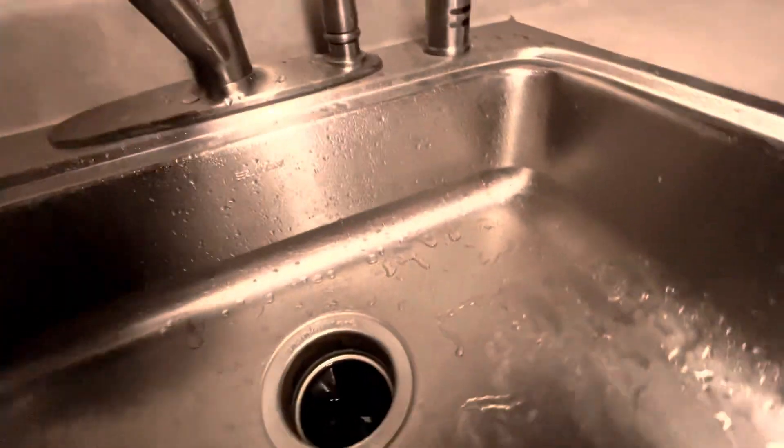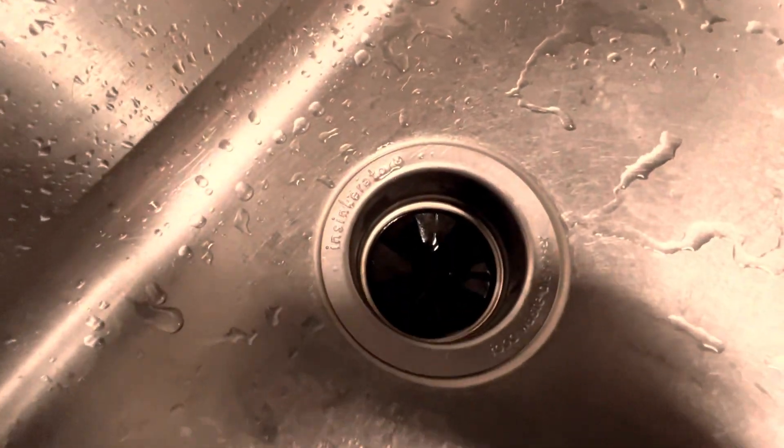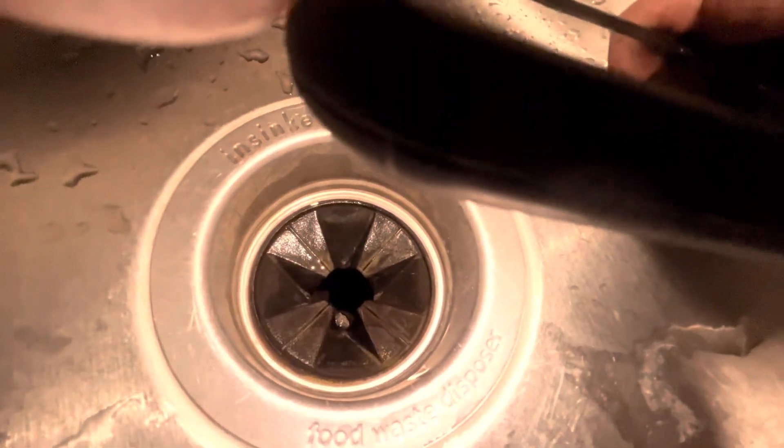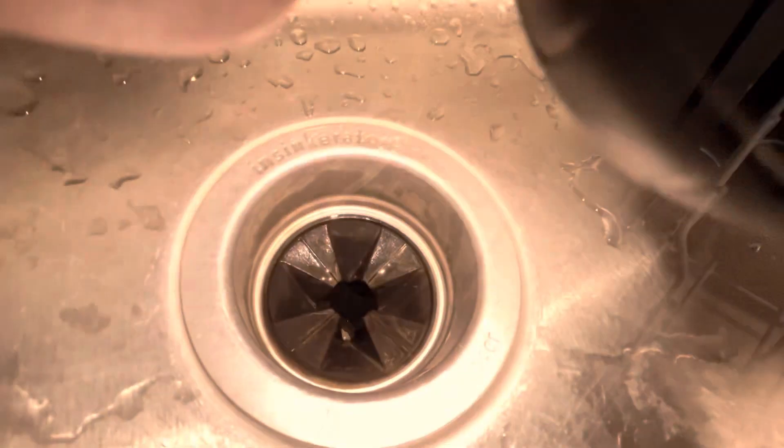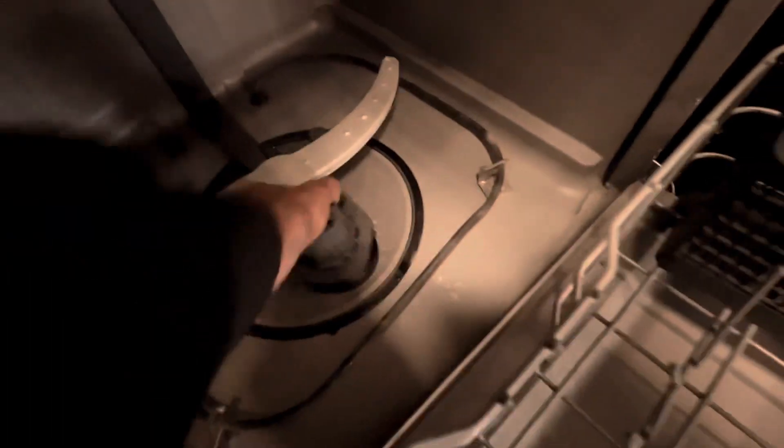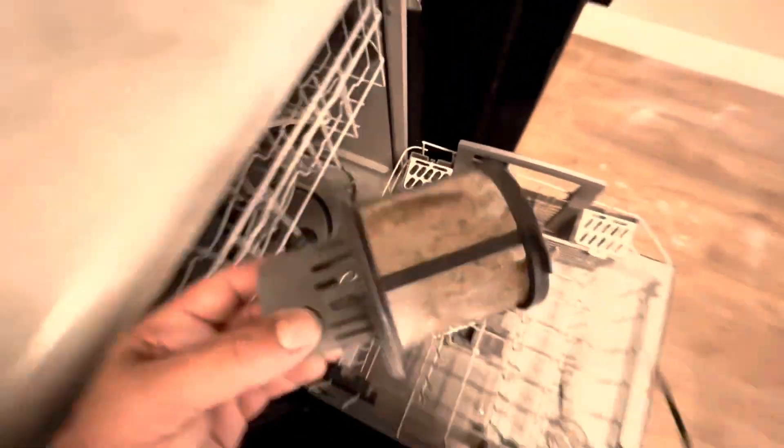So it just finished its drain cycle. There's still a little bit of water left. Nothing came out of the vent, and I could still hear it draining into the garbage disposal. It is draining correctly directly into the disposal. While you're here, you might as well clean the dishwasher filter as it's filthy because people were putting way too much food into the machine.